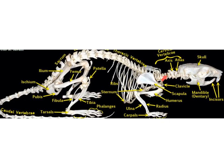Moving back, the vertebrae of the neck are the cervical vertebrae; the first is the atlas, the second is the axis, and the remaining ones are simply called cervical vertebrae. Where the ribs attach we have the thoracic vertebrae, followed by the lumbar vertebrae, then the sacrum and coccyx. The scapula is the shoulder blade, the clavicle is the collar bone, the humerus is the upper forearm bone, followed by the radius and ulna, carpals, metacarpals, and phalanges. The upper leg bone is the femur, the patella is the knee bone, and the lower leg has the tibia and the fibula, followed by tarsals, metatarsals, and phalanges.